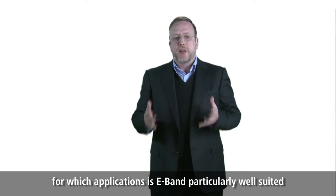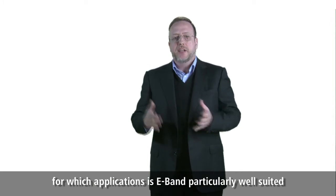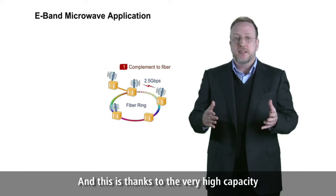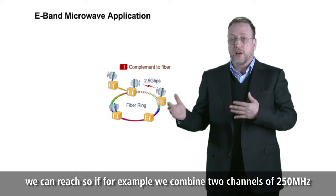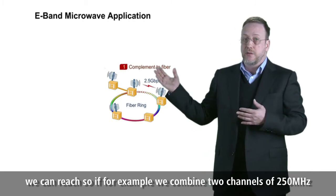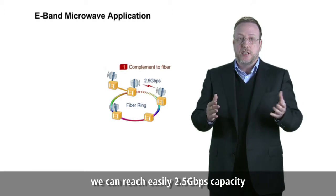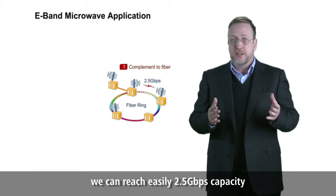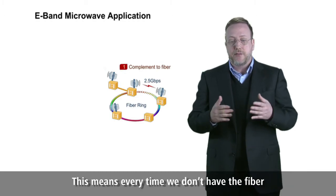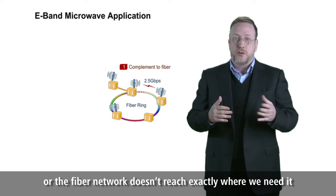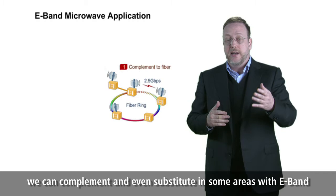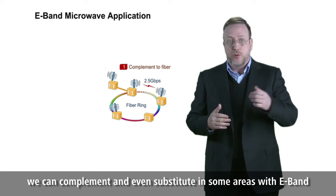Let's now consider for which applications eBand is particularly well suited. The first is supplement and complement to fiber, thanks to the very high capacity we can reach. For example, combining two channels of 250 MHz we can easily reach 2.5 Gbps capacity, and combining two polarizations we can go up to 5 Gbps. This means that every time we don't have fiber, or the fiber network doesn't reach exactly where we need it, we can complement or even substitute it with eBand.